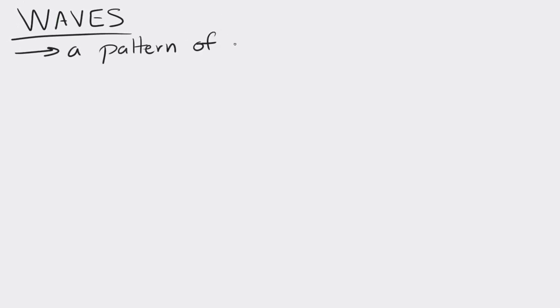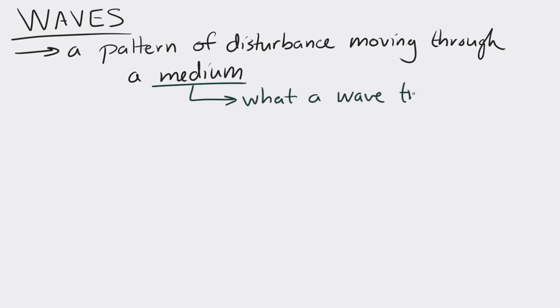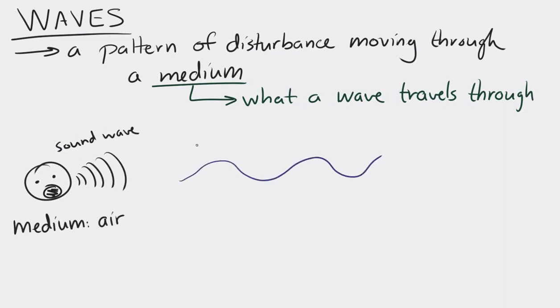Let's take a look at waves. First of all, what is a wave? One definition is that a wave is a pattern of disturbance moving through a medium. We also need to define what a medium is. A medium is just what a wave travels through. For instance, for a sound wave, sound waves move through the air, so air is the medium. For waves on the ocean, the waves move through the water, so water is the medium for an ocean wave.